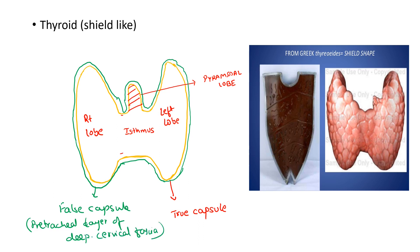Another important point to remember is that the pyramidal lobe is sometimes connected to the hyoid bone with the help of fibromuscular bands, and these fibromuscular bands are known as the levator glandulae thyroideae.